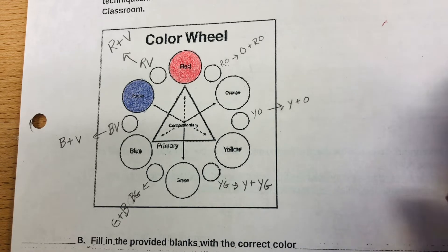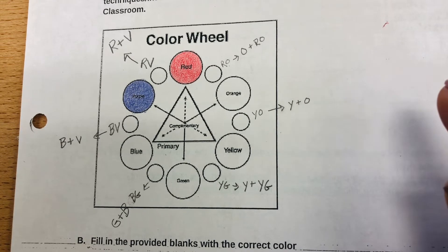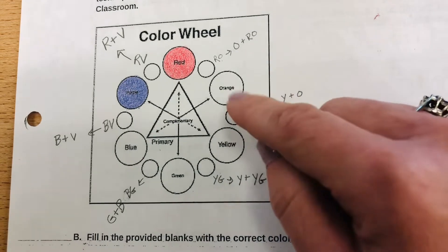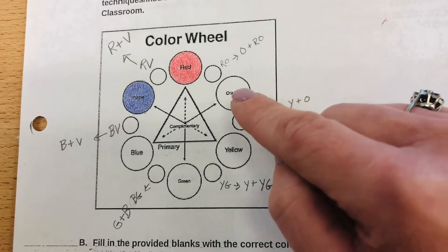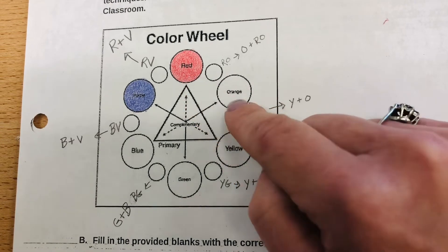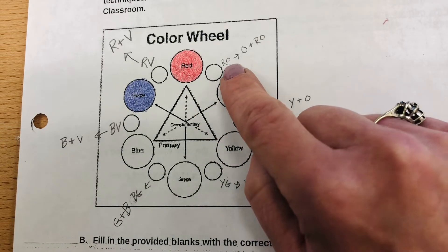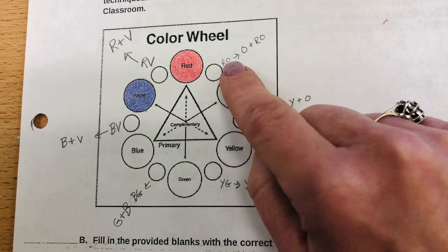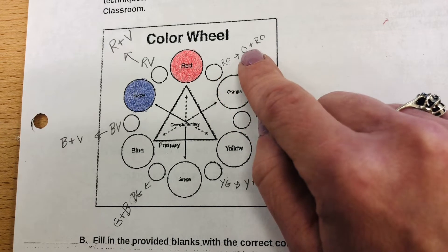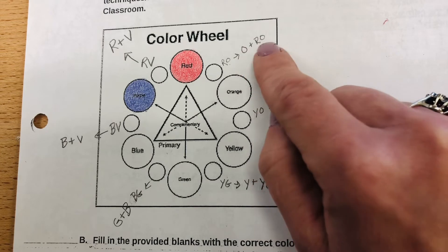So what I need for y'all to do right now, we're going to label these tertiary colors which are these small little circles here. We have in between the red and the orange, we have red-orange. You can just put R-O, and you're going to put orange first, then you're going to put the red-orange in your pack second.